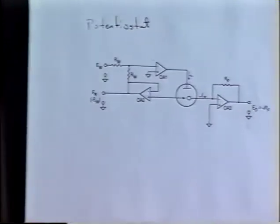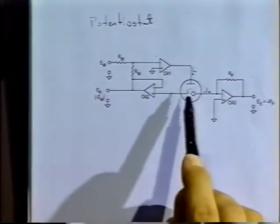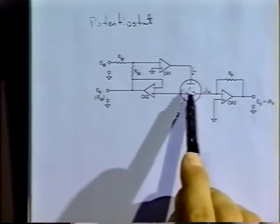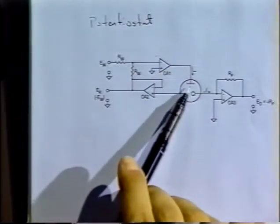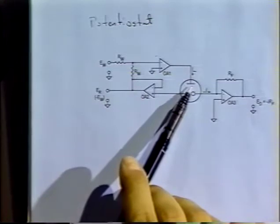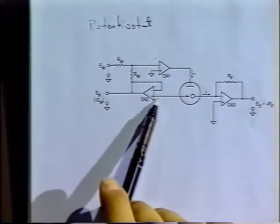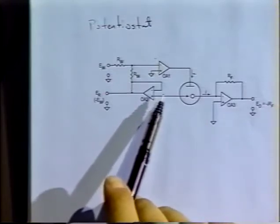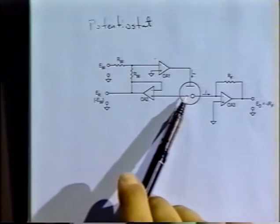What about the rest of it? The auxiliary electrode's job is to supply current and any voltage needed to drive the reaction at the working electrode. So we use this auxiliary electrode as a current source and a voltage supply. The reference electrode's job in a potentiostat is to measure the potential of the solution near the working electrode and to supply a reference potential point.